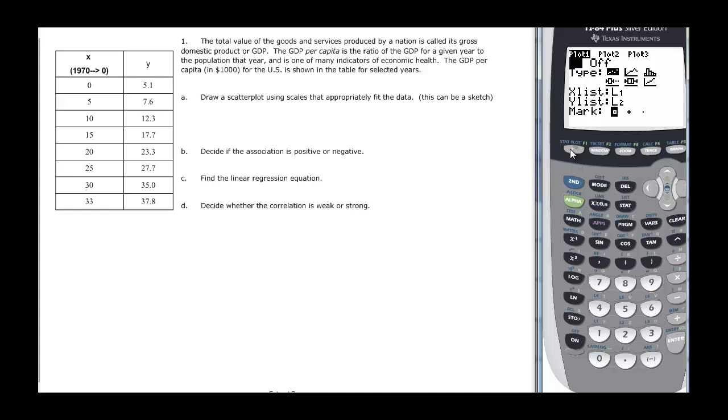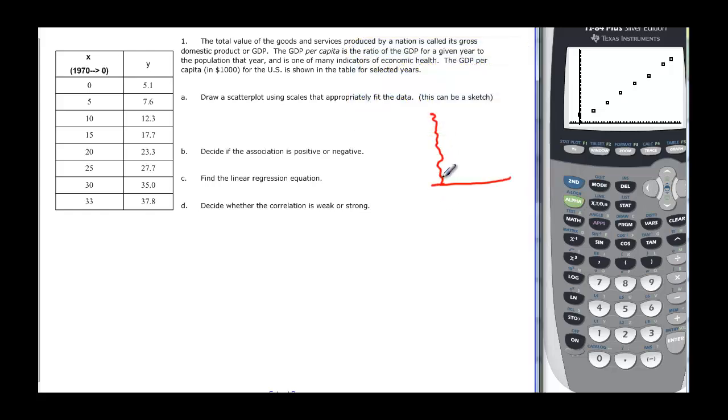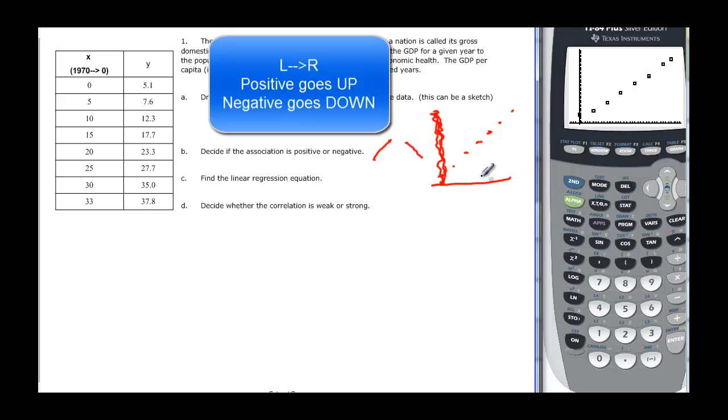So let's go back to Y equal, see that the plot is turned on. Then we want to hit Zoom 9, and it automatically sets a window for us, and we have this graph here, so I'm just going to sketch that real quick. It looks like I have something that looks pretty linear. It doesn't have to be perfect. I'm just going to kind of guesstimate. So it just says, decide if the association is positive or negative. Remember that positive goes up from left to right, and negative goes down from left to right. So this one's going up, so it's going to be a positive association.